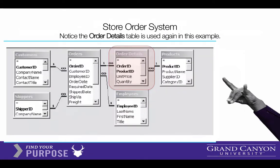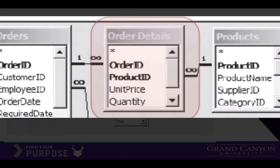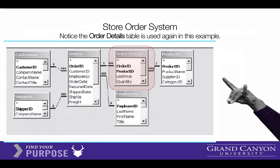I picked this one called store order system because it will probably look similar to what you're going to be building in your app for this class. Whenever you come up with orders and products there is this intermediate table called order details. That solves the many-to-many relationship issue — order details are the line items that show how many of each product are in your single order.